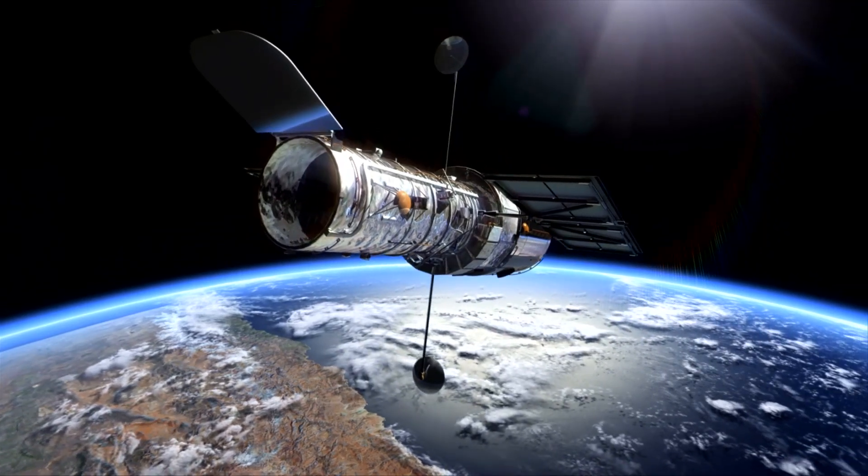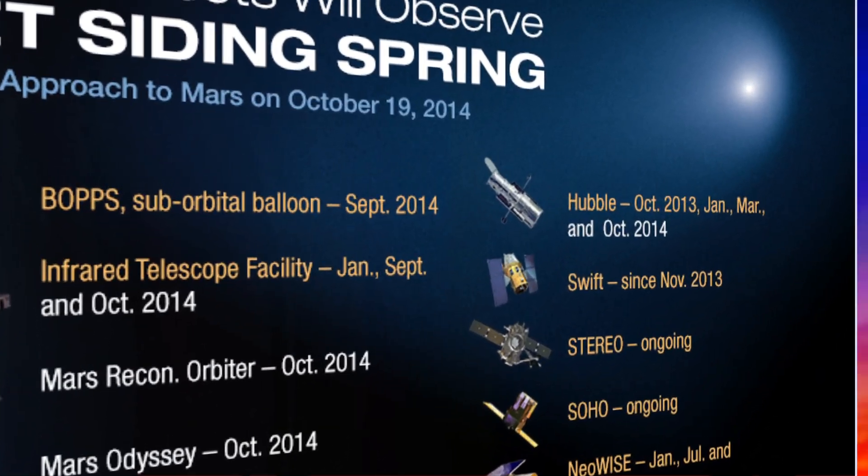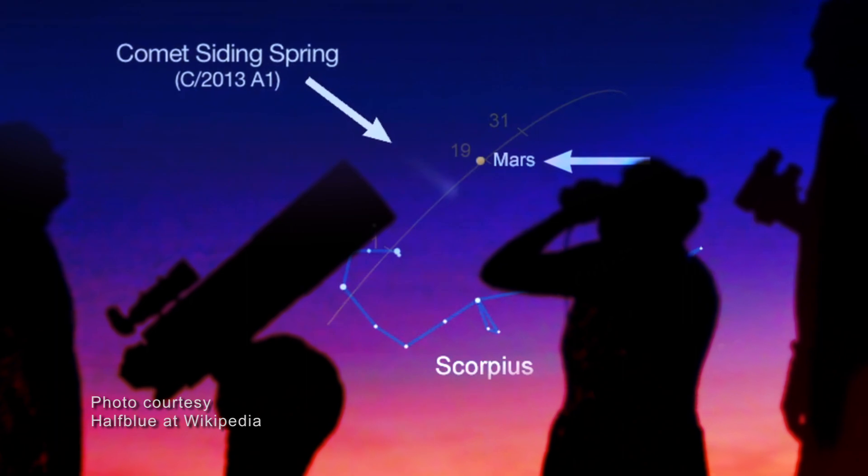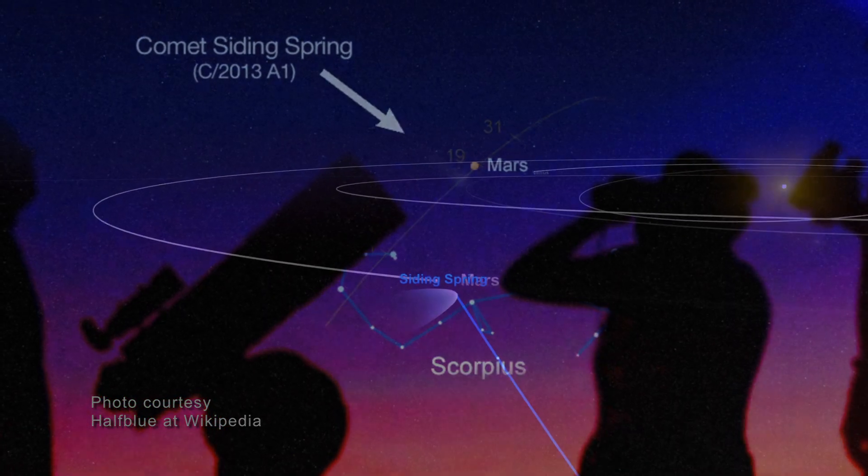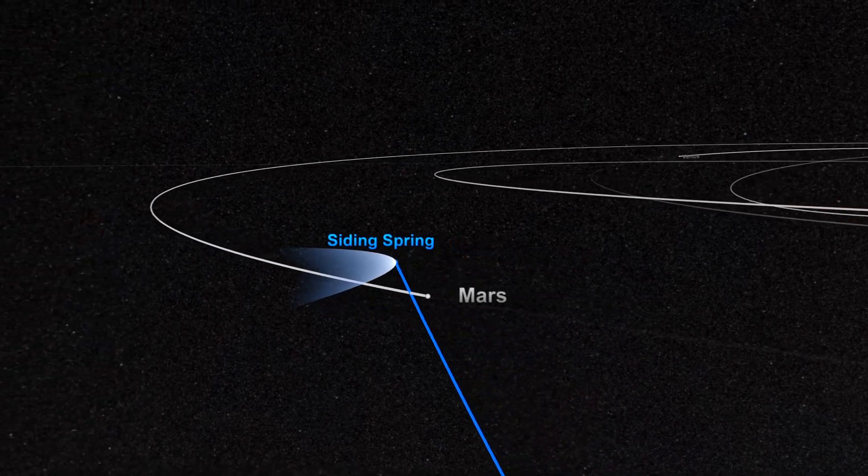One planet over, the Hubble Space Telescope and other space- and ground-based observatories will also be keeping an eye on Comet Siding Spring, as will legions of amateur astronomers armed with backyard telescopes, all excited to witness this historic close encounter between Mars and its icy visitor.